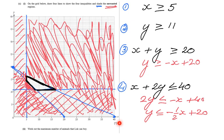A two-point question: work out the maximum number of animals that Luke can buy. We are using a graph to solve this question. Hopefully you realize the maximum number of animals is either at this point or that point.